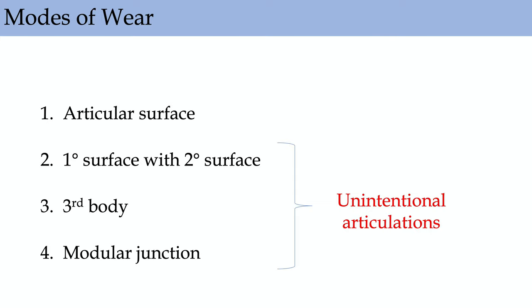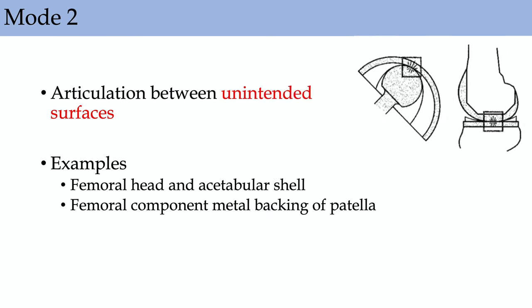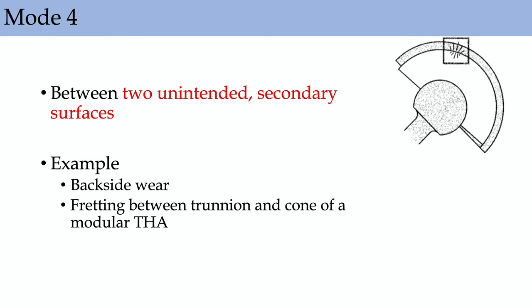Modes of wear involve intended or unintended surfaces. Mode 1 is between intended surfaces — femoral head and liner. Mode 2 is between the femoral head and the shell, or femoral component and patella backing. Mode 3 is third-body wear — polyethylene debris. Mode 4 is between two unintended secondary surfaces, such as backside wear under the polyethylene tray of a knee, or fretting between a trunnion and cone of a THA or TKA. The effective joint space is where any particles can reach and osteolysis can form.